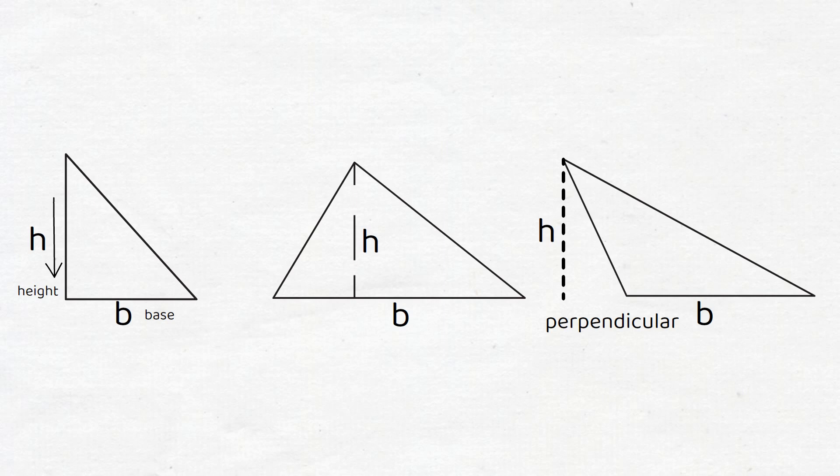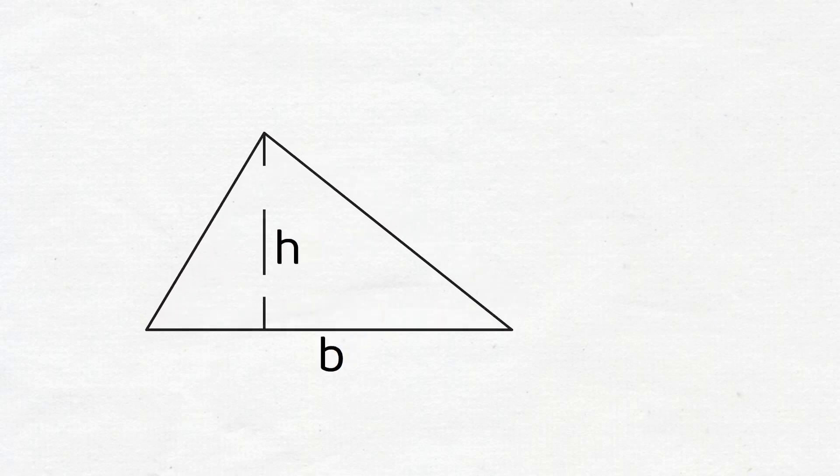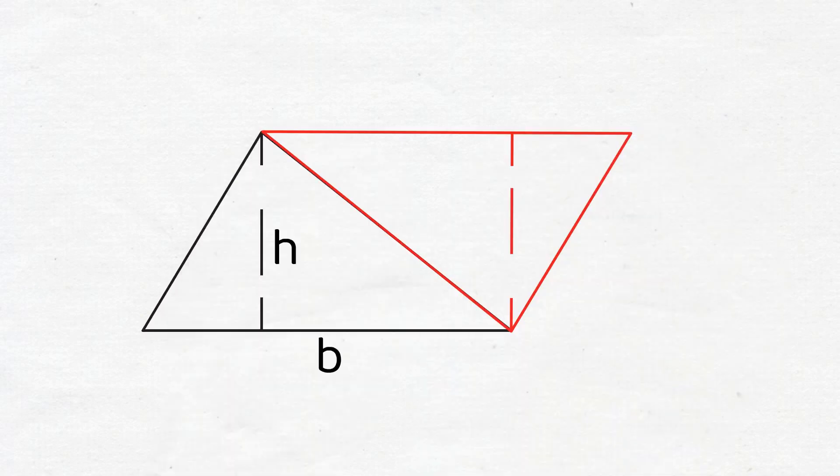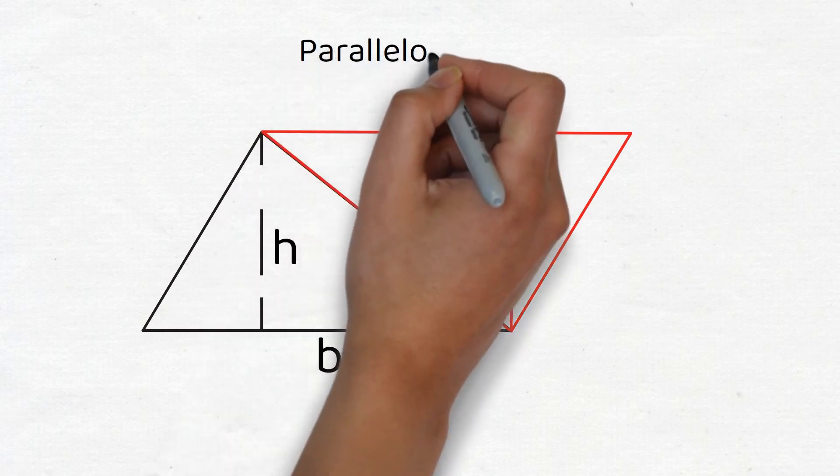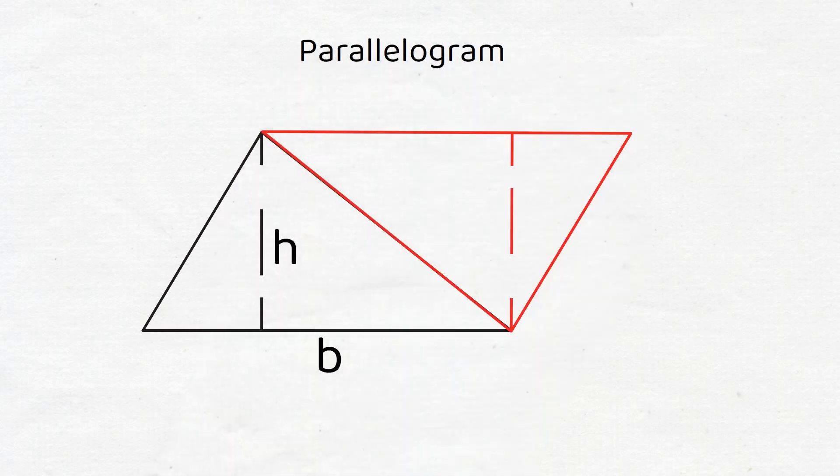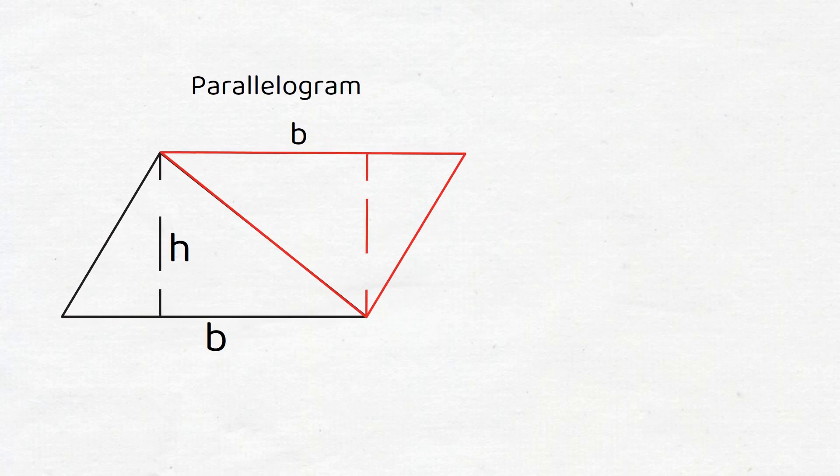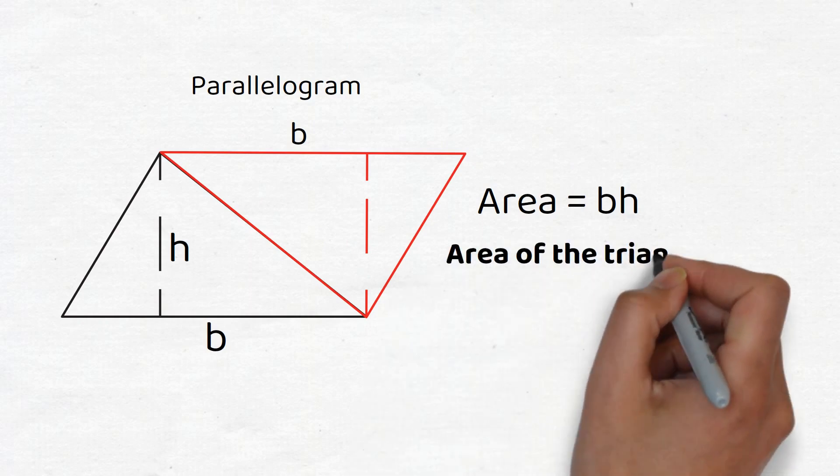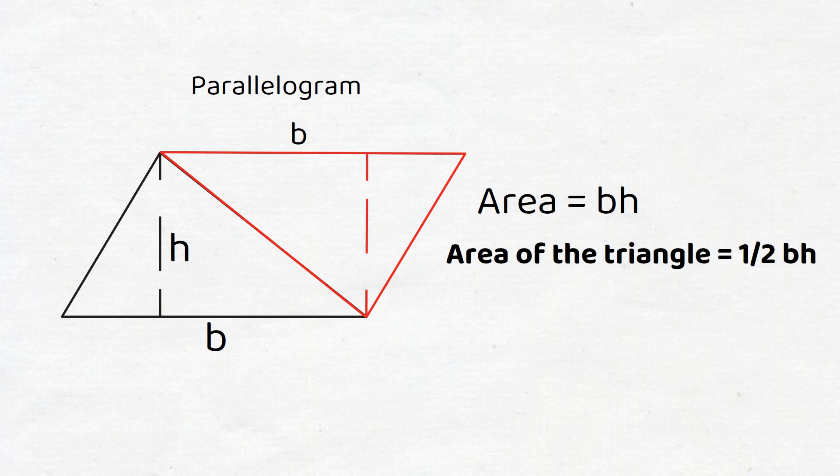We have created a second identical copy of the triangle in this diagram and placed it on top of itself. These two triangles together produce a parallelogram, whose width or base is b and whose height is h. The area of a parallelogram is the base times the height. Therefore, the area of the triangle will be one half of that, namely one half of the base times the height, which is the general formula for the area of a triangle.